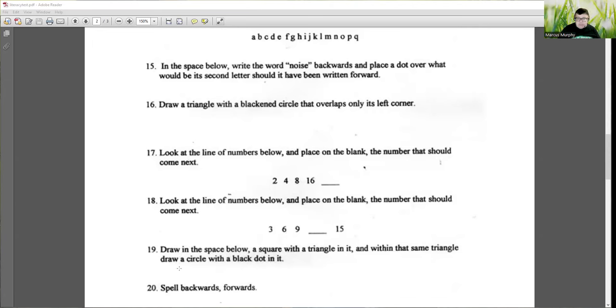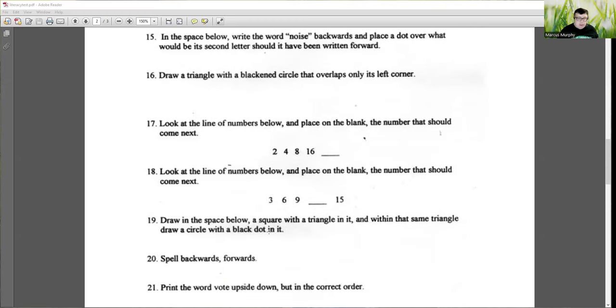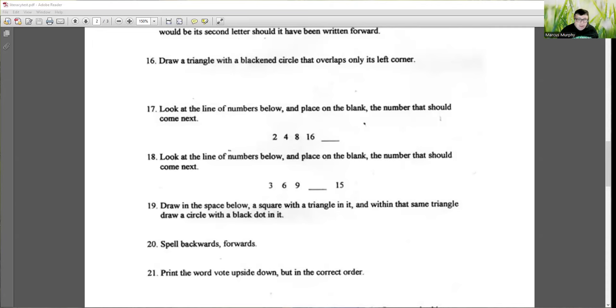Draw in the space below, a square with a triangle in it, and within that same circle, draw a circle with a black dot in it. Time wasting. You've got 10 minutes and that's going to use a fair bit of that. Now, spell backwards, forwards.